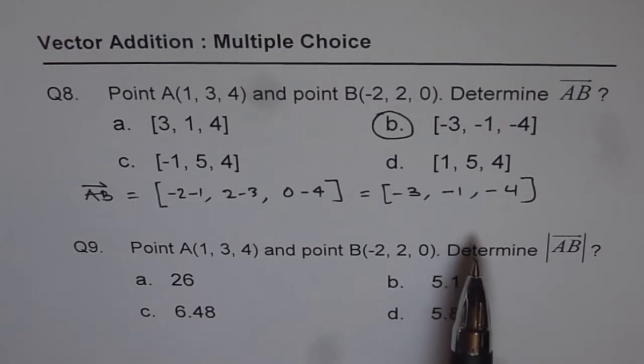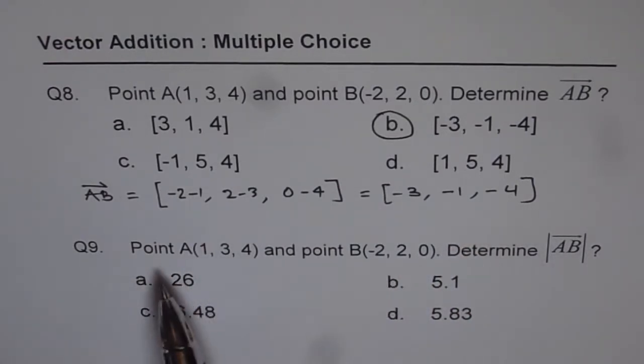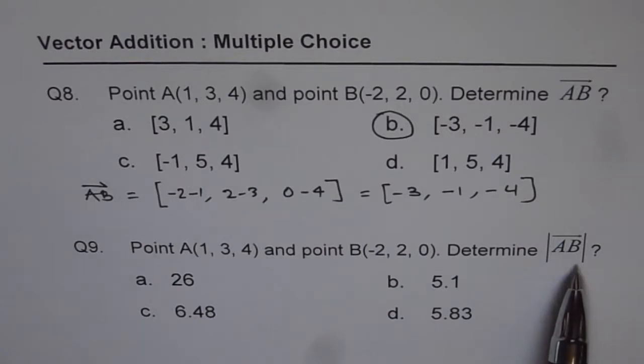Now question number 9 is related to question number 8. Given the same points, point A(1, 3, 4) and point B(-2, 2, 0), determine magnitude of vector AB.